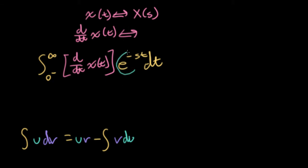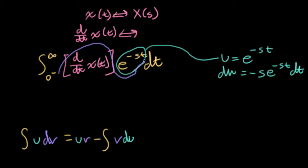So it will make sense to have this e to the minus st be our u, so du is minus s e to the minus st dt. So that would mean that this derivative expression along with this dt would equal our dv. Fortunately, from the fundamental theorem of calculus, we know that integrals and derivatives are opposites, and we wind up with v being just x of t.